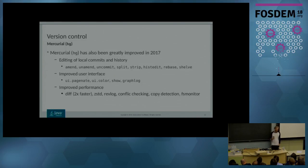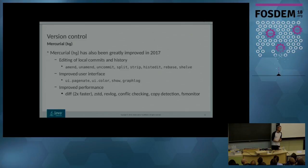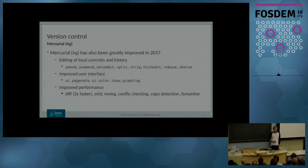Not only have we done work on our side, but Mercurial itself has done tremendous work in 2017, releasing new features every few months. The latest release, 4.5, is just around the corner. The story around editing local commits and history is much better now. We have commands such as amend, un-amend, uncommit, split, rebase, and histedit — all to safely change your history so it becomes nicer to work with before you push upstream. The interface has improved, extensions are moving into core Mercurial — the pager extension has moved into ui.pager, the color extension is available in ui.color. The 'show' command and graphlog provide better overviews of work and history. Performance has also been greatly improved.